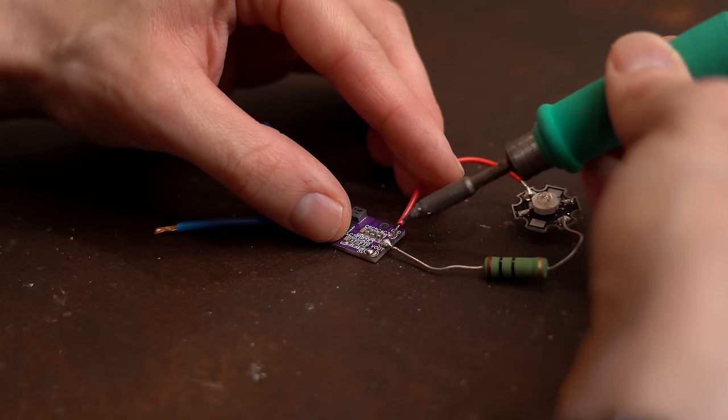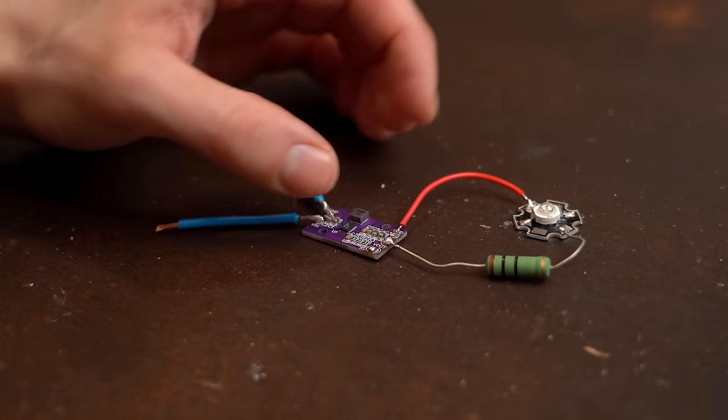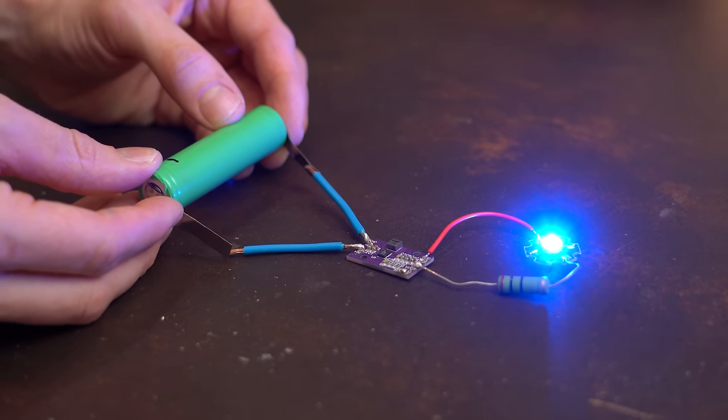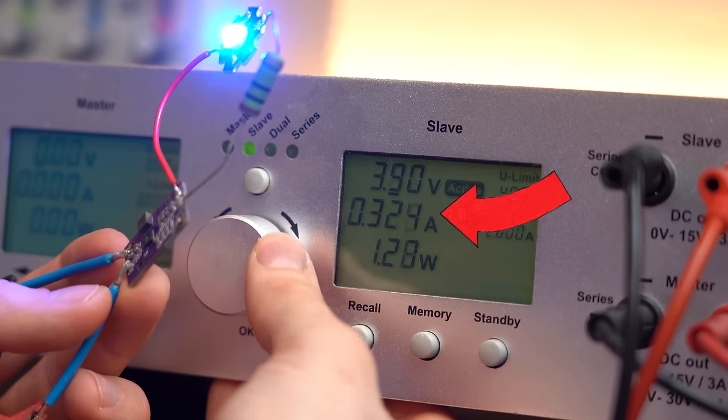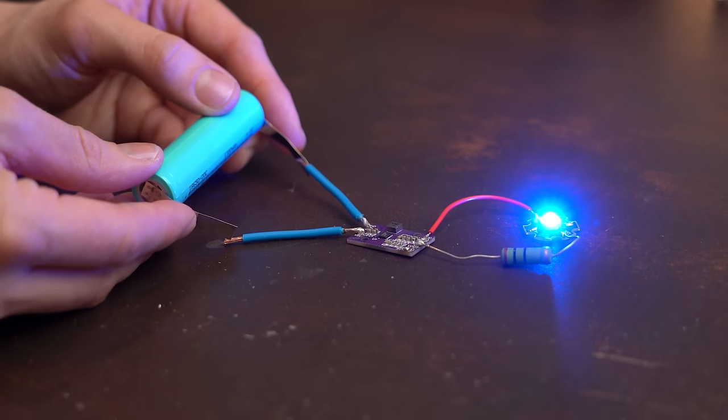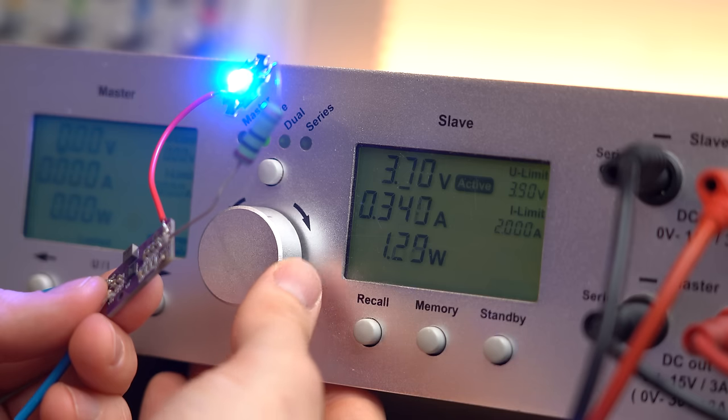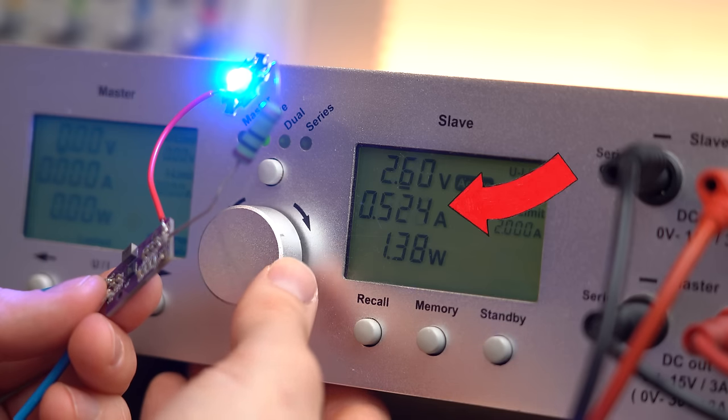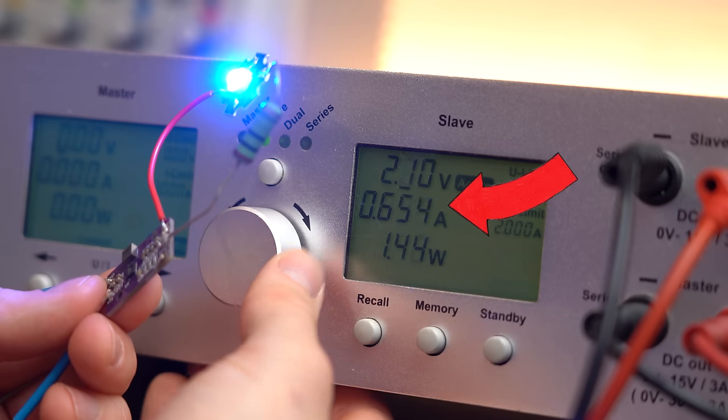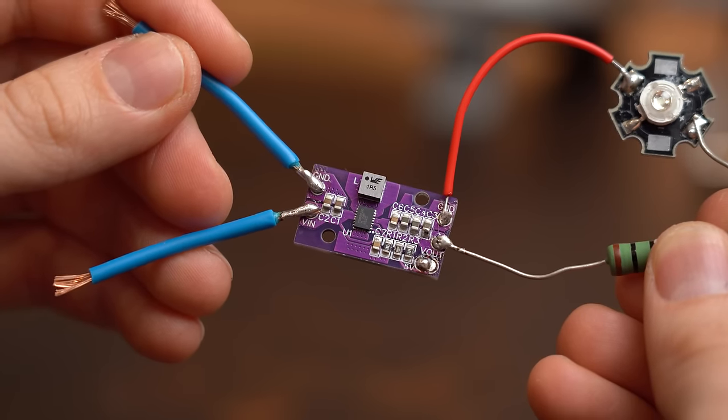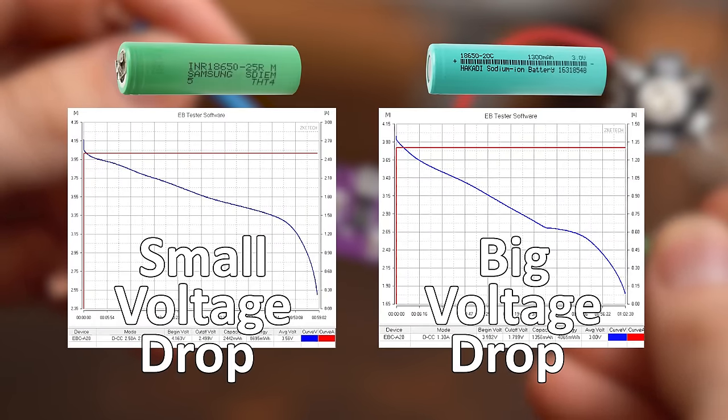But then again when you got a load that needs a constant power then it is definitely easier to work with a more stable voltage because then the current also stays around the same. With a more decreasing voltage though the current has to constantly rise to get the same output power. And thus your power electronics have to be designed this way which can be a bit more expensive. So yeah, both curves have their pros and cons.